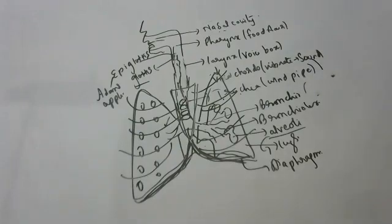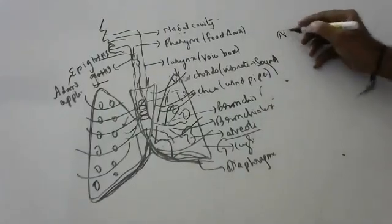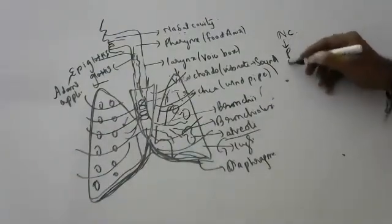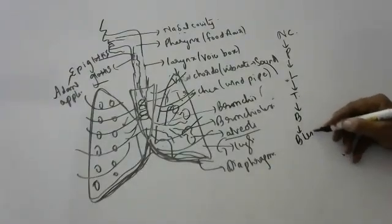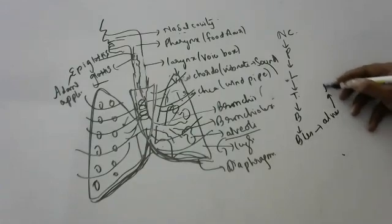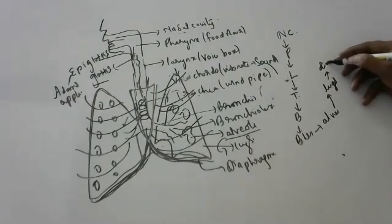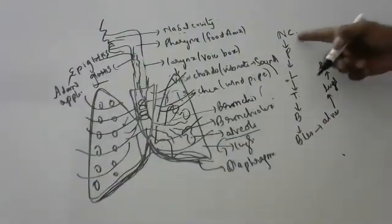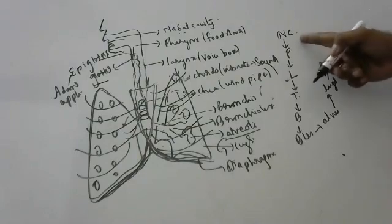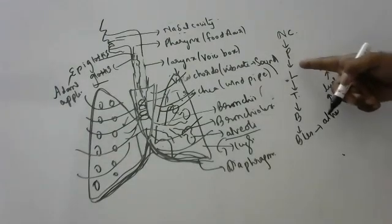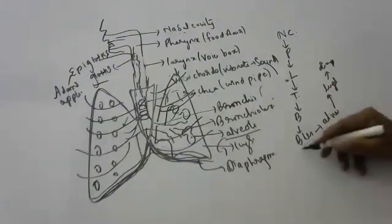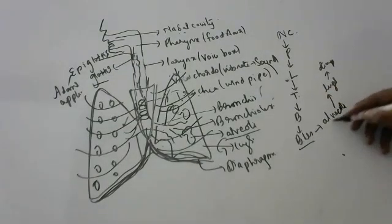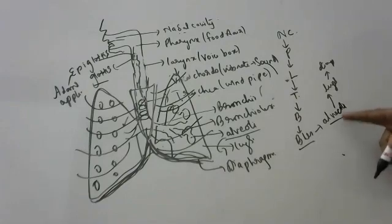The respiratory organs in sequence are: nasal cavity, pharynx, larynx, trachea, bronchi, bronchioles, alveoli — and the lungs rest on the diaphragm. Students repeated the sequence: nasal cavity, pharynx, larynx, trachea, bronchi, bronchioles, alveoli, lungs, diaphragm.